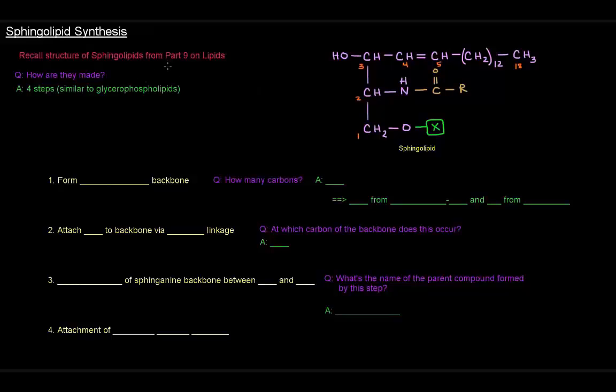Recall from part 9 on lipids, we talked about sphingolipids and their structure. Sphingolipids have a sphingosine backbone, which is highlighted here in purple. They have an acyl group attached at carbon number 2 of the backbone via an amide linkage. The polar head group is this X here, which could be a phosphoalcohol or a sugar or sugars.